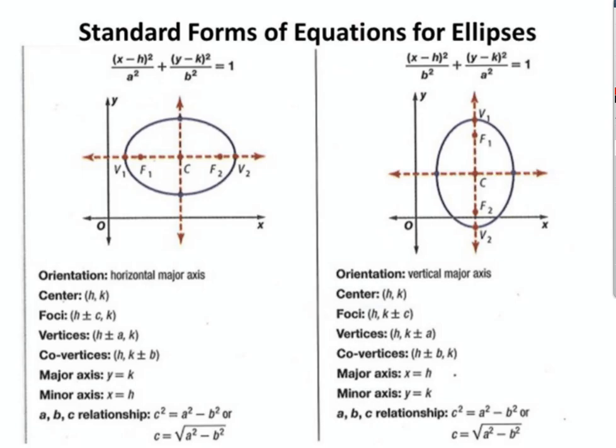Because the ellipse can be stretched two different directions — if stretched horizontally, the major axis is horizontal. The a value is always the larger value. If stretched horizontally, the a value goes with x; if stretched vertically, the a value goes with y. Whether the major axis is horizontal or vertical determines the coordinates of our foci, vertices, co-vertices, and major and minor axes.